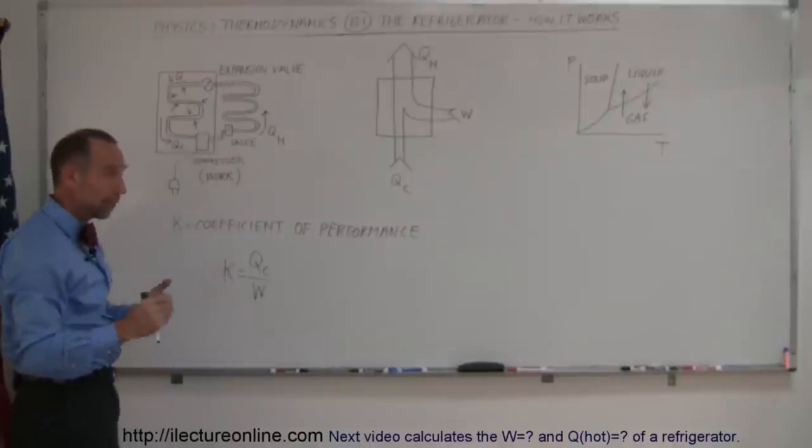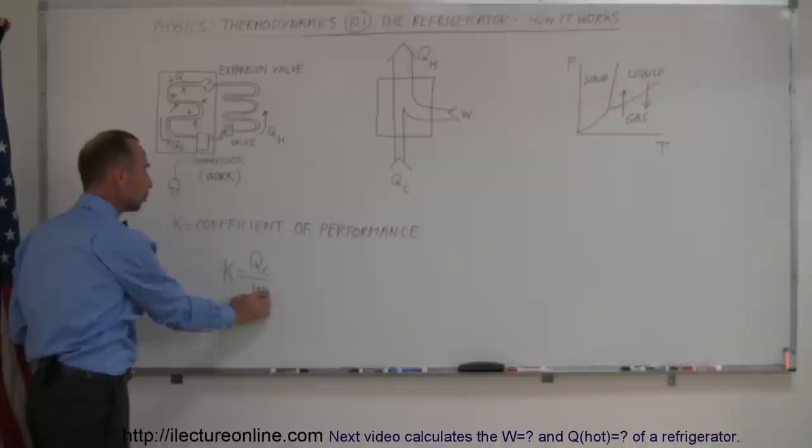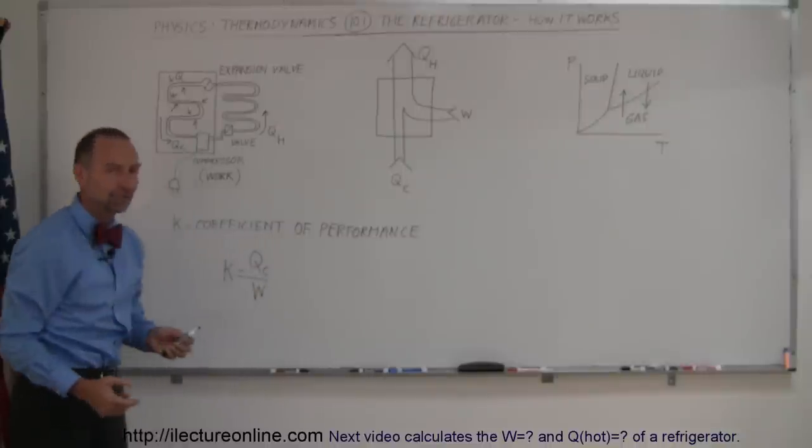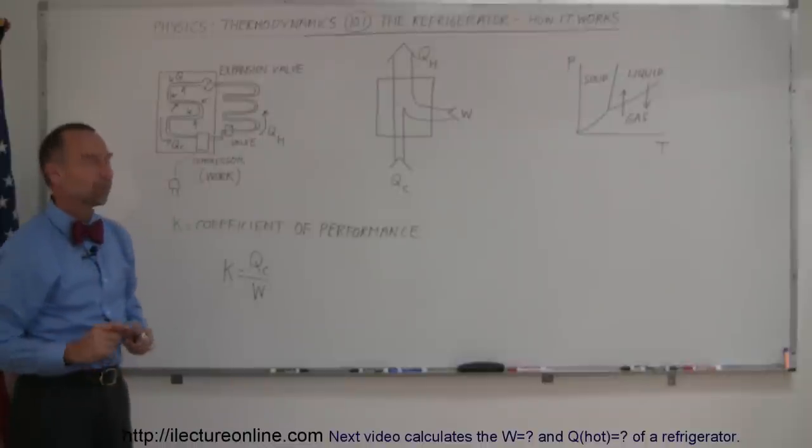And of course, the greater K, the better, because that means you take more heat out of the cold refrigerator, and you do that by using less work. So you want work to be as small as possible, and the heat we take out of the refrigerator as great as possible. And so, therefore, the greater the K, the better the refrigerator, the greater what we call the coefficient of performance.